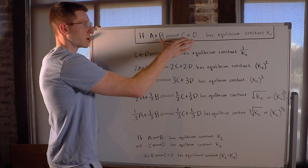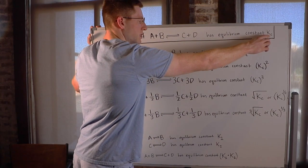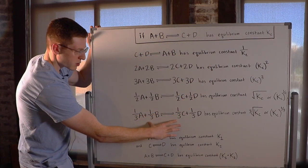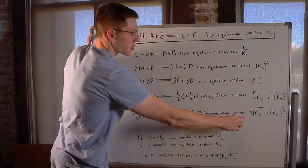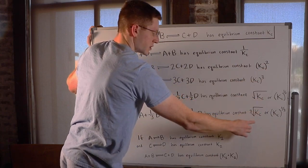So if you start off with A plus B is in equilibrium with C plus D, and that has equilibrium constant KC, and you divide all the stoichiometric coefficients by 3, or you divide the reaction by 3, you have to take the cubed root of what your KC was.